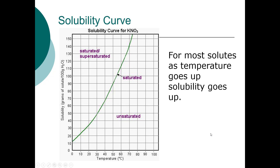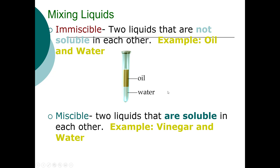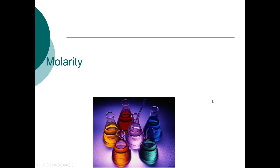When talking about two liquids, we use the terms miscible and immiscible. Immiscible liquids are not soluble in each other — like oil and water. When there's an oil spill, the oil floats to the top and can be cleaned up because oil and water don't mix. Miscible liquids are soluble in each other: vinegar and water mix with no problem, and alcohol and water mix with no problem.